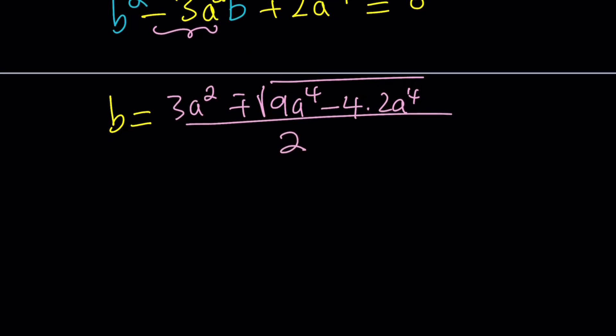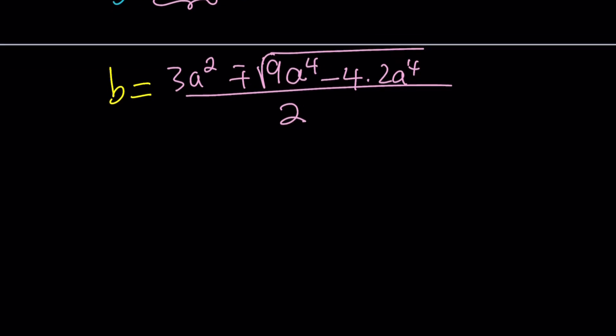Now from here we get two solutions. This is 9a to the power 4. Now we're going to subtract this. This is minus 8a to the 4th. So that's going to leave us with a single a to the 4th. If you square root a to the 4th, that should give you an a squared. And from here, we can split this up.